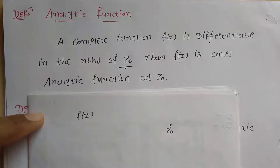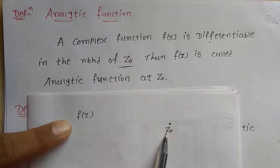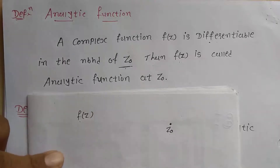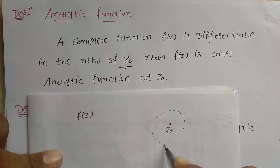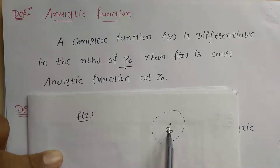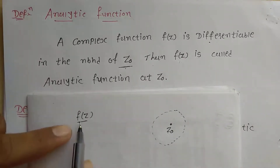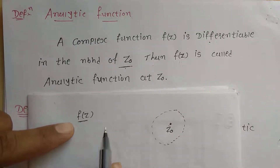The first condition is: f(z) is differentiable at z0, and also differentiable in the neighborhood of z0. Neighborhood of z0 means f(z) is differentiable at z0 and f(z) is differentiable in the neighborhood of z0.